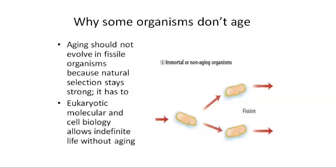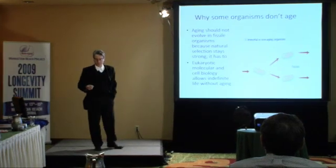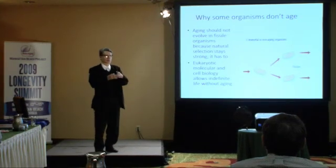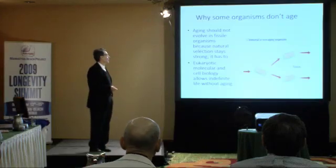To evolutionary biologists, the reasons for this are fairly straightforward. In organisms that evolved by strictly symmetrical fissile reproduction — that's splitting exactly in two, with no product of the division being specially favored or disfavored — natural selection stays strong, because if it didn't, basically that lineage would go extinct.